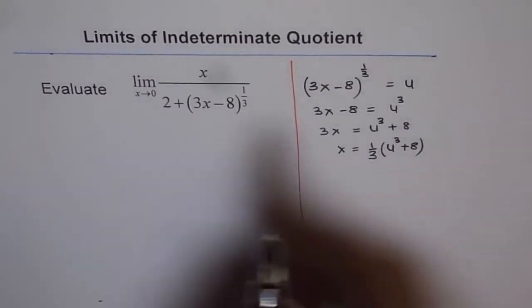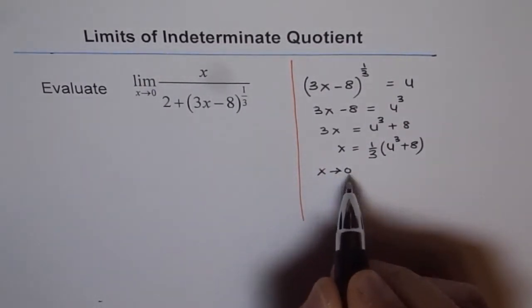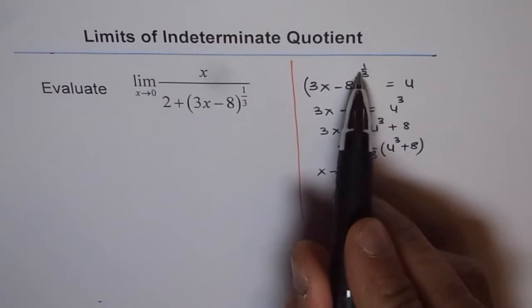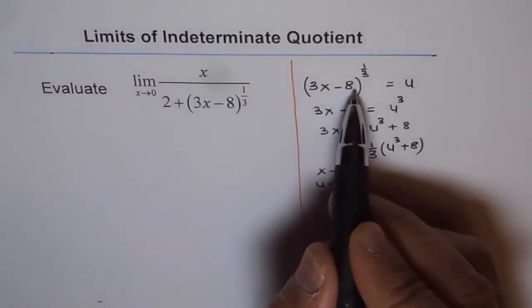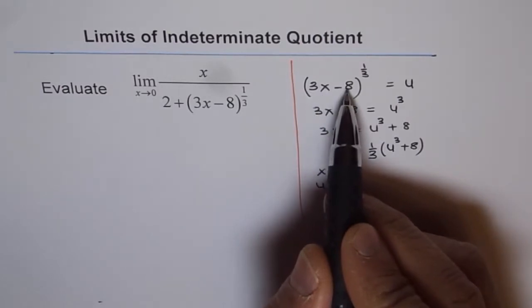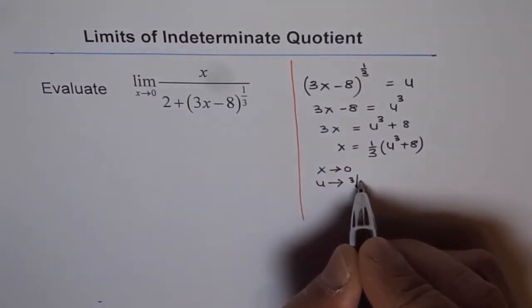Now the other part is as x approaches 0, what happens to u. As x approaches 0, then u approaches, this is 0, minus 8 third root. u approaches the value third root of minus 8.